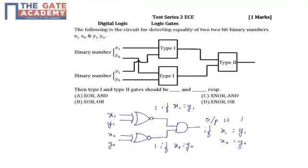Option B is XOR, OR. Option C is XNOR, AND. And option D is XNOR, OR. So this is the circuit for basic 2-bit binary comparator for getting the, for detecting the equality.